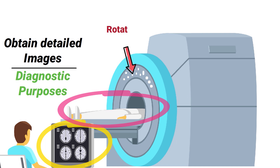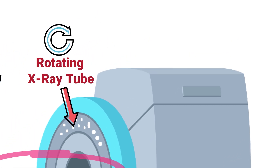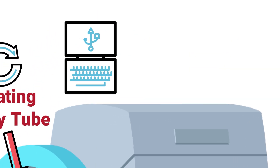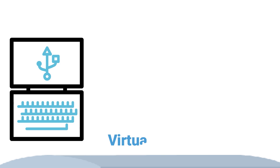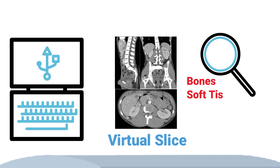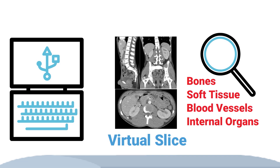The actual scanner used in computed tomography uses a rotating x-ray tube that performs measurements from different angles. The data is processed with an algorithm and computer technology to provide us with a virtual slice of the human body, so that we can get a closer look at bones, soft tissue, blood vessels, and internal organs.